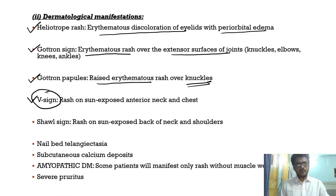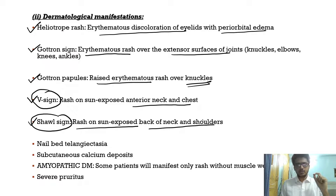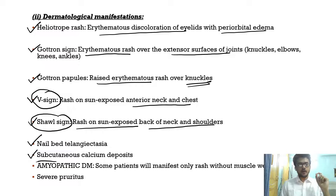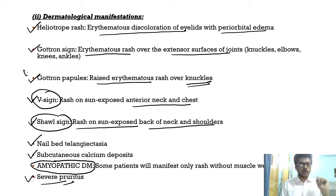Anteriorly you have the V sign — a rash on the sun-exposed anterior neck and chest. Posteriorly you have the shawl sign — a rash on the sun-exposed back of the neck and shoulders. Other cutaneous manifestations include nail bed telangiectasia, subcutaneous calcium deposits, amyopathic dermatomyositis (skin changes without muscle weakness), and severe pruritus.